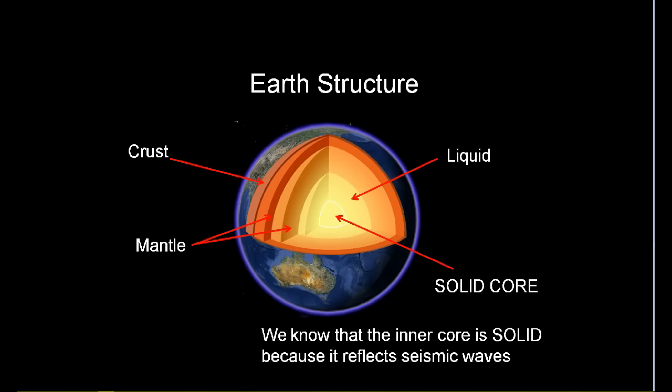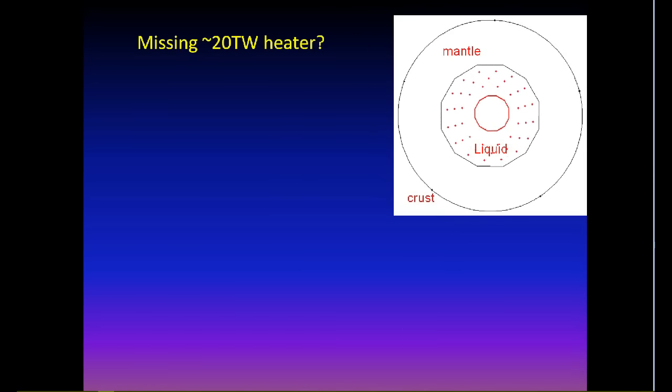We know that the Earth's inner core is solid because it reflects seismic waves. Imagine hovering above the North Pole and looking down through Earth with a special vision. This is what you would see at equatorial plane.